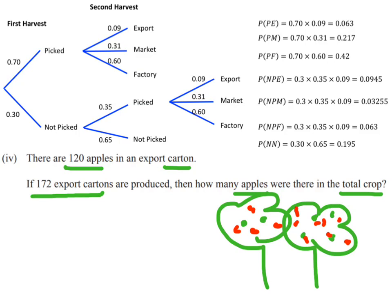Let's break this down and think piece by piece. The first thing I want to think about is the fact that we've got all these export cartons. When I've got a carton of apples with 120 apples each, and I've got 172 cartons, I want to know how many of them were export quality apples.